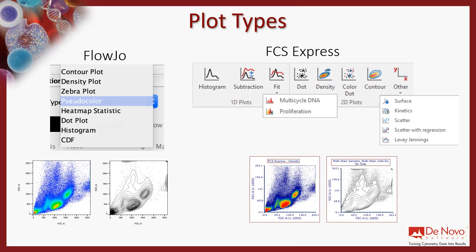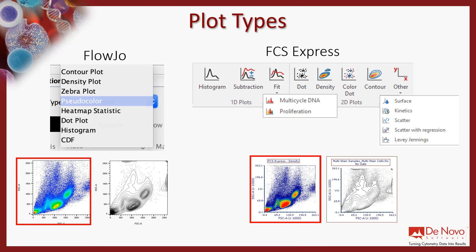Once loaded, we want to display that data in plots. Most of the plots available in FlowJo are also available in FCS Express — for example, contour, density plots, histograms, and more. Sometimes different terminology is used for the same thing. For instance, zebra plots in FlowJo are called contour with black and white formatting in FCS Express, and pseudo color plots in FlowJo are called density plots in FCS Express. FCS Express also has specific plots for cell cycle and proliferation, similar to FlowJo. In addition, FCS Express has additional plot types including scatter, scatter with regression, Levy-Jennings, violin, box and whisker, and more.